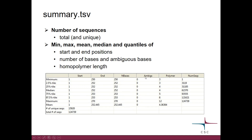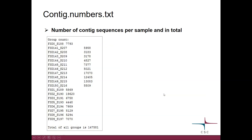The summary also shows the amount of ambiguous bases and the length of homopolymers. The output file contig.numbers.txt shows how many contig sequences there are per sample, and you can see that some samples have a much higher number of contigs than others.